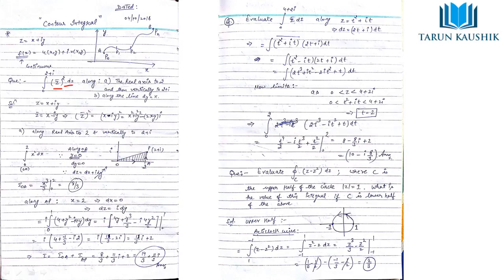The limits are from 0 to 2+i. We have to integrate along two paths. Path one: along the real axis to 2, then vertically to 2+i. We plot the origin, move from 0 to 2 along the x-axis, then one unit in the y-direction to reach 2+i. We integrate in two portions: from 0 to A (segment OA), and then from A to P (segment AP).